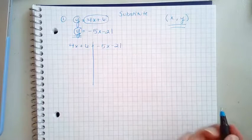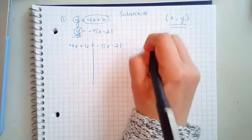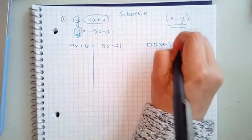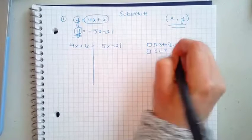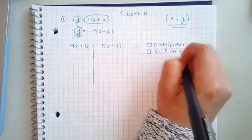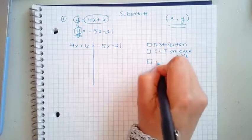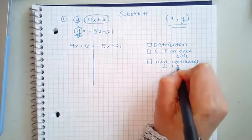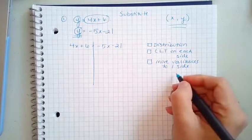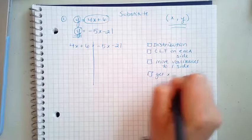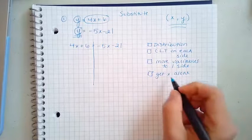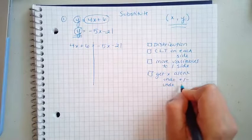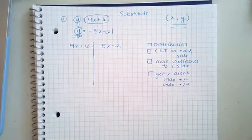I'm gonna get all the X's on one side. So really our checklist of things is we want to do any distribution, combine like terms on each side, and then we want to move variables to one side. Once we do that, then we start to get X alone. And to get X alone, we're always going to undo addition or subtraction first, and then we're gonna undo multiplication or division.